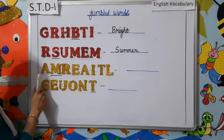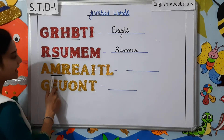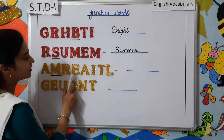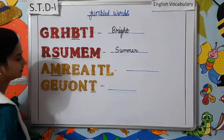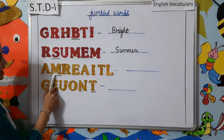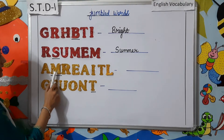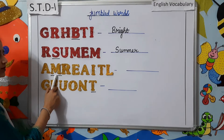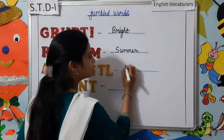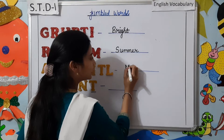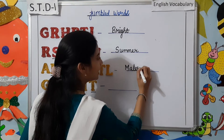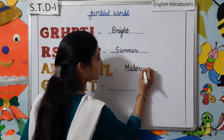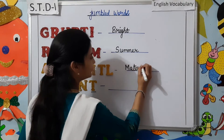The next one: A-M-R-E-A-I-T-L. We have underlined the letter M, so we have to start with the letter M. The correct spelling is M-A-T-E-R-I-A-L. Material.